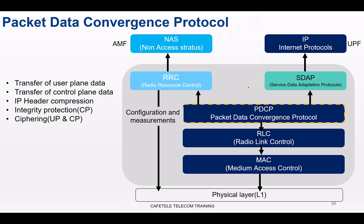This optimization is crucial for conserving precious radio bandwidth and improving data throughput. The second key activity PDCP performs is ciphering and integrity protection. PDCP encrypts user data to safeguard it from unauthorized access over the air interface and also decrypts received data. This ensures data confidentiality for users. When the base station transmits data to the device, it applies ciphering for both the user plane and control plane.